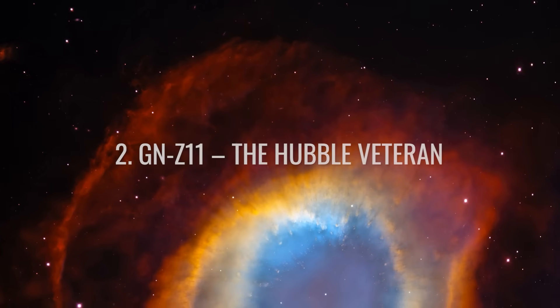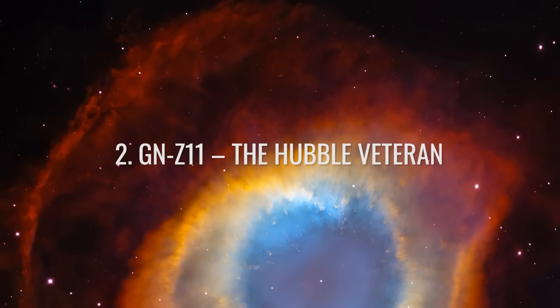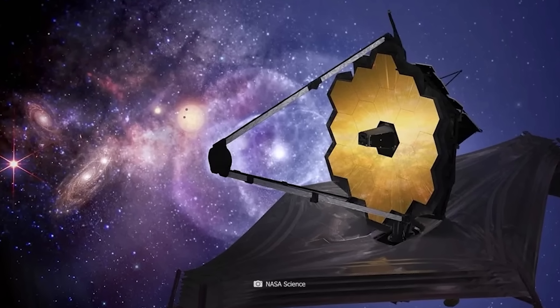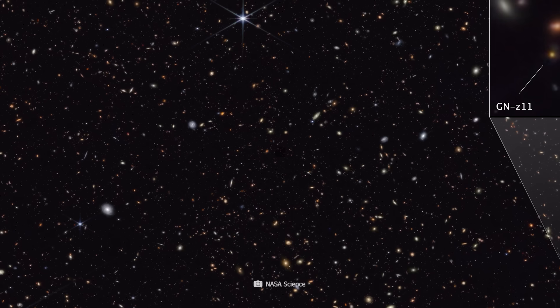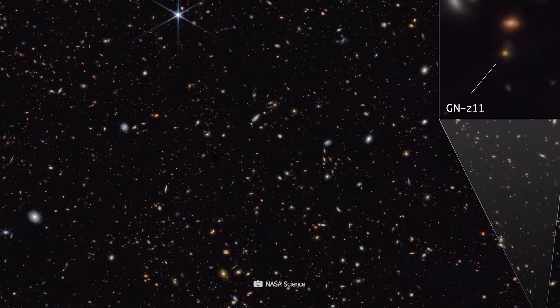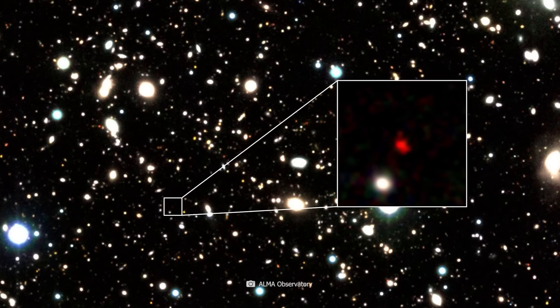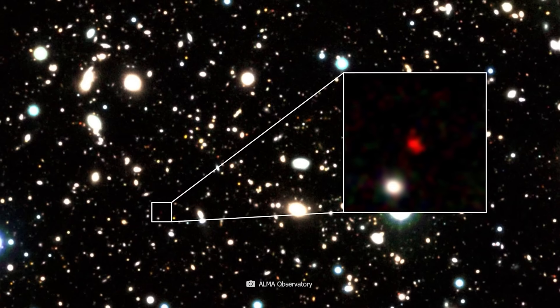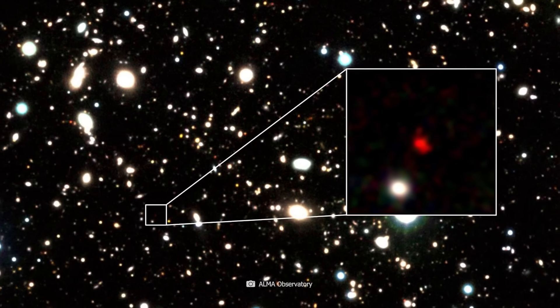Number two: GN-Z11, the Hubble Veteran. Hubble discovered the galaxy GN-Z11 even before the JWST was launched. The unusually old galaxy was still considered a curiosity and possibly an observation error, because its existence only 400 million years after the Big Bang did not really fit into the overall cosmic picture.